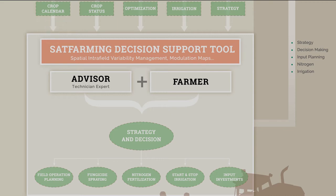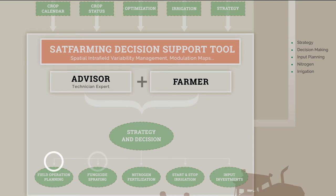Spatial crop cover variability will be partially corrected by a fertilization modulation map generated by the system. Irrigation schedule will be optimized by the water balance module. Spraying and field managing operations will be precise thanks to the predicted growth stages, and yield information will be useful to anticipate farmer strategic decisions.